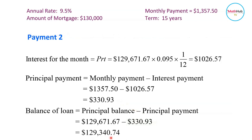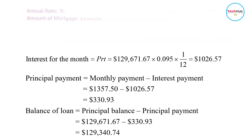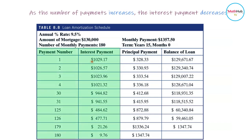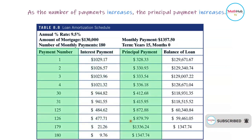This is how the loan amortization schedule looks. Notice that as it goes closer and closer to 180 months, the amount that goes to the interest payment decreases, and the amount that goes to the principal payment increases.